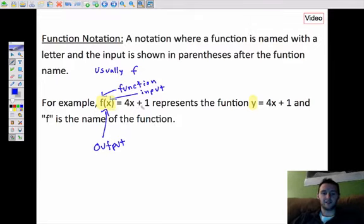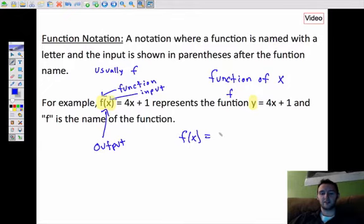For example, f(x) = 4x + 1. That function represents the function y = 4x + 1, and f is the name of the function. We usually read this as f of x, which is pretty much just short for function of x, and we just happen to call the function f. In other words, we are saying that the output is equal to 4 times the input plus 1.